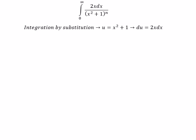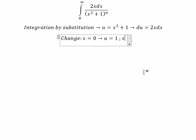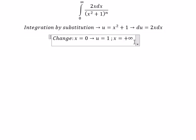Next we need to change the bounds. When x equals 0, we get u equals 1 because we put 0 in here. That's why we get 1 for u. If x equals positive infinity, we put positive infinity in here, and we get u equals positive infinity.